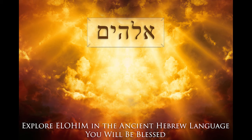Now you know the conventional meaning of Elohim — he is the supreme creator. Now you know the picture meaning of Elohim: God the Father, God the Son, God the Holy Spirit creating a temporary home for us on earth. Now you know the number meaning of Elohim: God the Father, God the Son, and God the Holy Spirit are all participating in a plan to accomplish your salvation so that you can spend eternity in heaven.